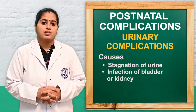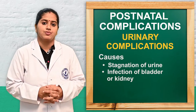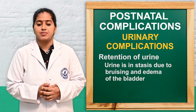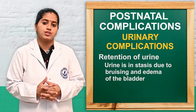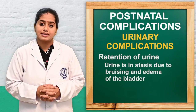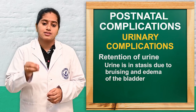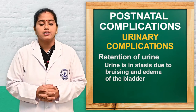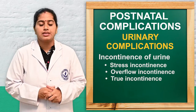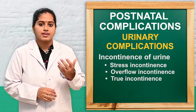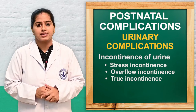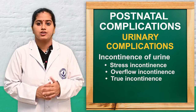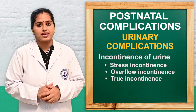The third condition is urinary complications. Urinary complications may arise due to stagnation of urine, urinary infections of the bladder or kidney, repeated vaginal examination, or catheterization during the delivery procedure. The first type is retention of urine, where urine is stagnant inside the bladder due to bruising or edema of the neck of the bladder. Next is incontinence of urine — stress incontinence can occur immediately after retention, overflow incontinence, and true incontinence if there is any genitourinary fistula.